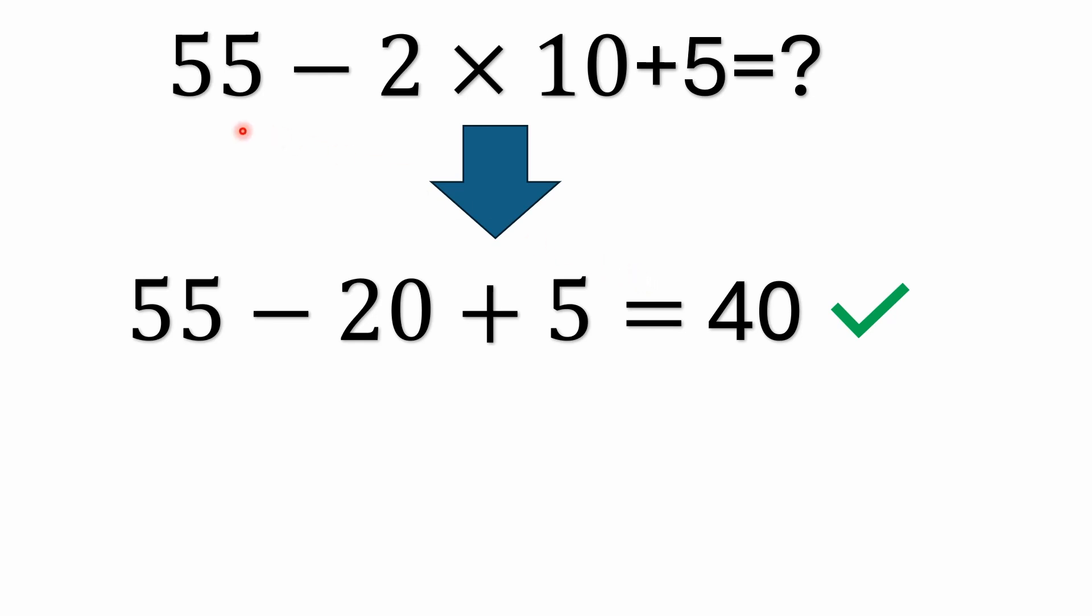I know there's a lot of people out there that take the 55 minus 2 and get 53 and then they're multiplying by 10 and they're getting a really big number over 500 which is incorrect.